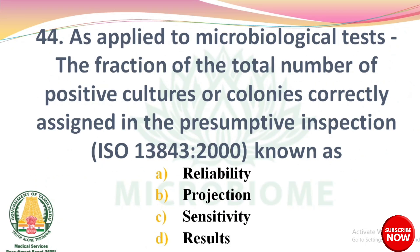Next question: As applied to microbiological test, the fraction of total number of positive cultures or colonies correctly assigned in the presumptive inspection known as — options: reliability, projection, sensitivity, results. The right answer is option C: sensitivity.